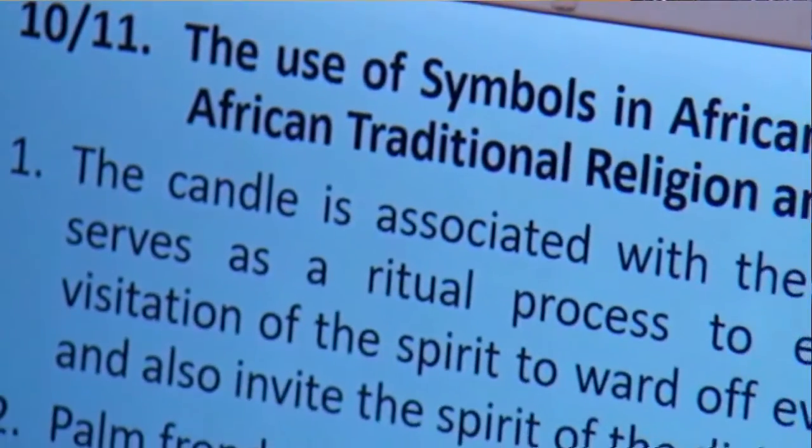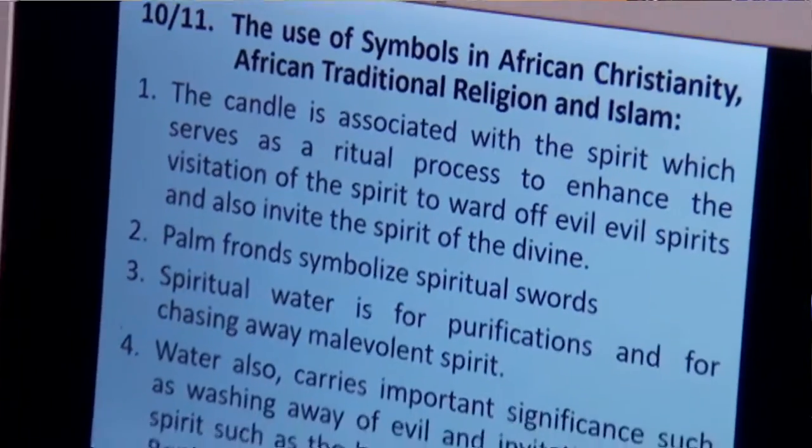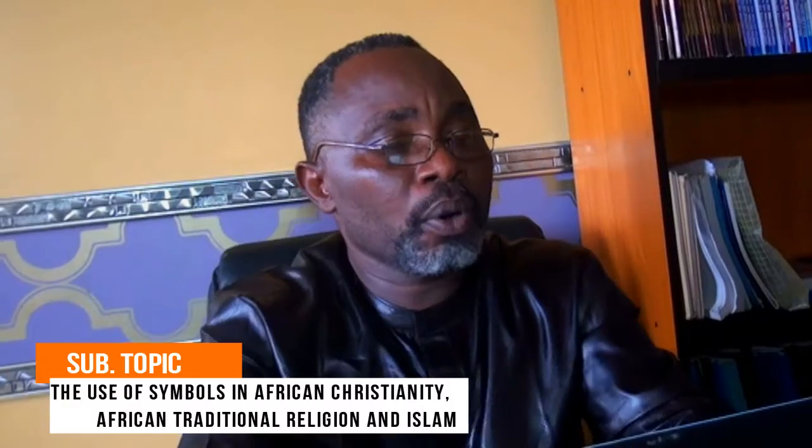I will look at number 10 and 11 together, talking about the use of symbols in African Christianity, African traditional religion and Islam. What he is saying is: what are some of those major dominant symbols found in African Christianity, African traditional religion and Islam, and what are their symbolic interpretations? I was able to bring out among others a few of them here which I will briefly explain.